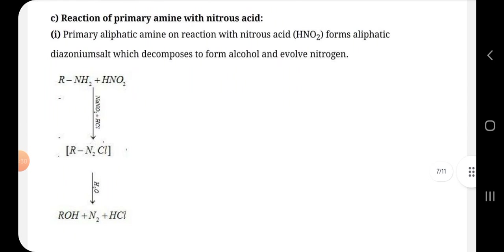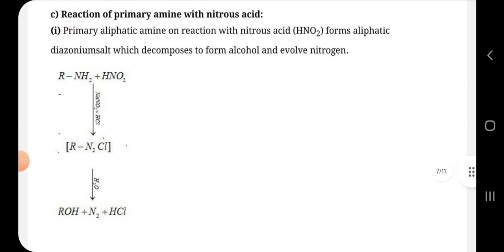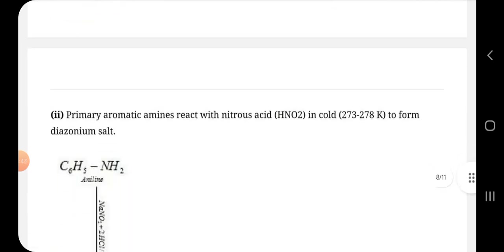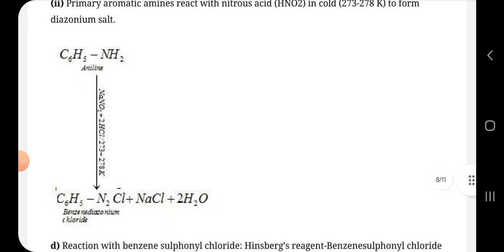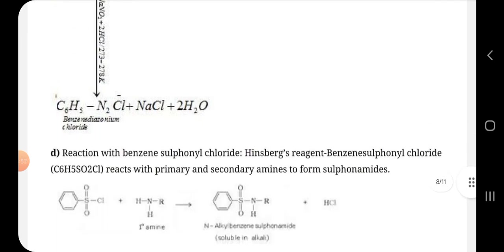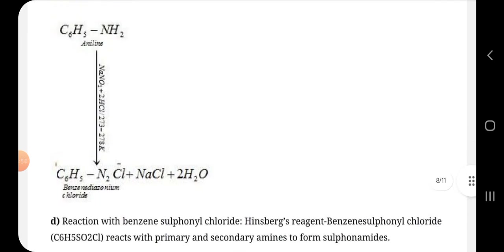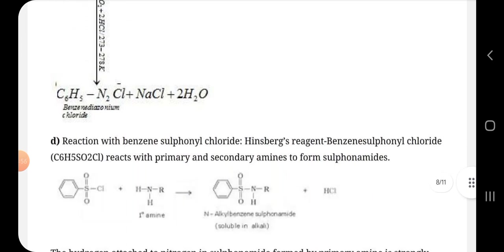This is the reaction of primary amines with nitrous acid. Primary aliphatic amines on reaction with HNO2 form aliphatic diazonium salt, which decomposes to form alcohol and evolve nitrogen. Then, primary aromatic amines react with HNO2 in cold to form diazonium salt. This is benzenediazonium chloride. This is the whole reaction.